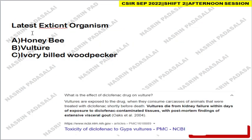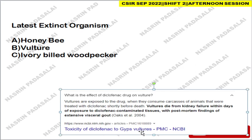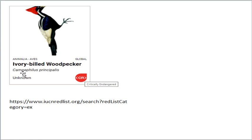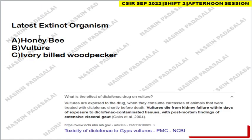Next: latest extinct organism. If the question asks which organism went extinct due to diclofenac, the correct answer is vulture — refer the article on toxicity of diclofenac to vultures. If asking about the latest extinct organism generally, ivory-billed woodpecker may be the intended answer, but according to the IUCN list it is listed as critically endangered. Vultures are also critically endangered, not extinct. So both are critically endangered, and I'll confirm once the official paper is out.